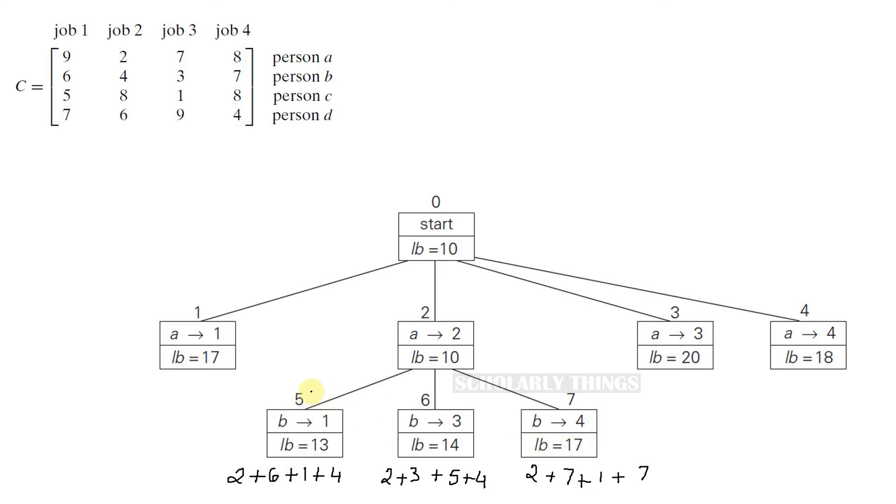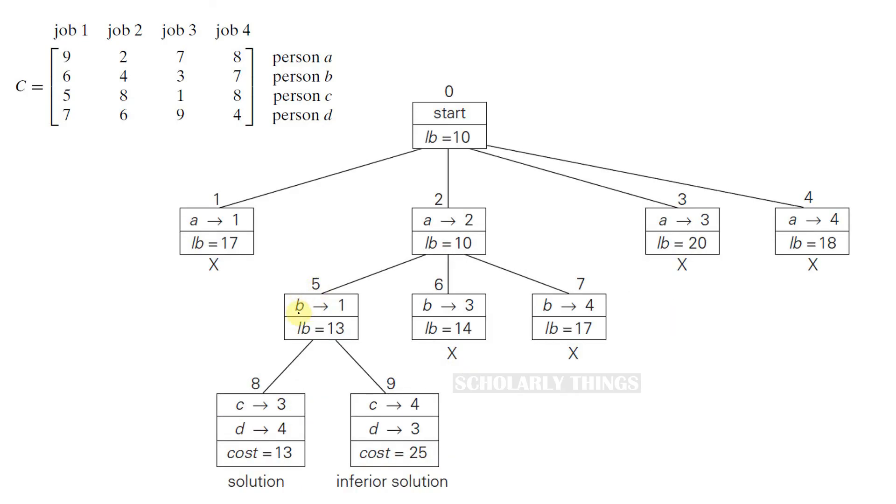Among these, node 5 has the smallest lower bound, so let's choose that. So we just assigned job number 1 to person B. Now the remaining ones to check are job number 3 and job number 4 to be assigned to person C and person D.